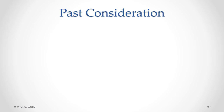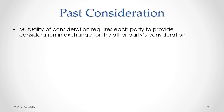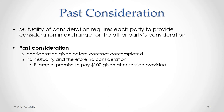Let's now look at the issue of past consideration. Mutuality of consideration requires each party to provide consideration in exchange for the other party's consideration — the key word is that there has to be an exchange. With past consideration, that's where the consideration was given before the contract was contemplated or entered into. In that type of situation, there is no mutuality and therefore no consideration has been exchanged. For example, if you're my neighbor and you mow my lawn as a favor, and once you've already done that I promise to pay you $100 for mowing my lawn, that promise to pay is one-sided. There is no consideration being given in exchange because the service has already been rendered.